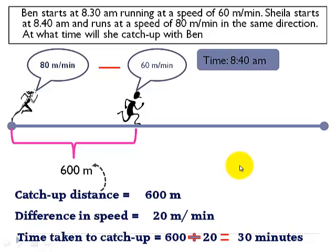This is a variation of the problem that we saw earlier. In the problem that we saw earlier, both of them start at the same time. So in the previous case, Ben had a head start meaning he was ahead of Sheila while they started to run. That was the previous case and the distance between Sheila and Ben was taken as the catch up distance. In this case, Ben starts running first. So by the time 10 minutes has elapsed, Ben would be 600 meters away. So the catch up distance in this case becomes 600 meters.